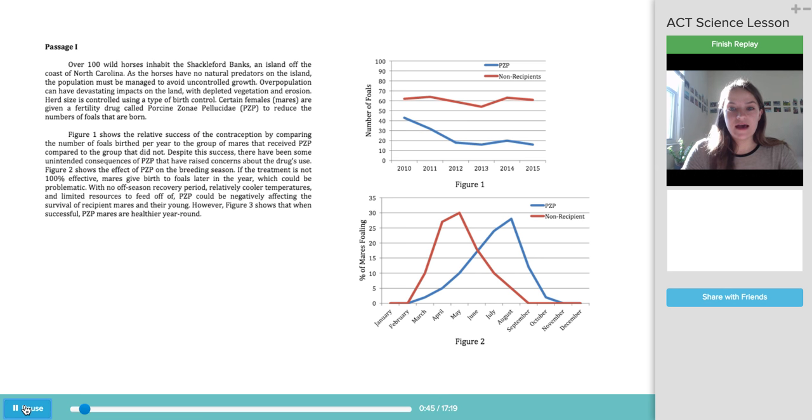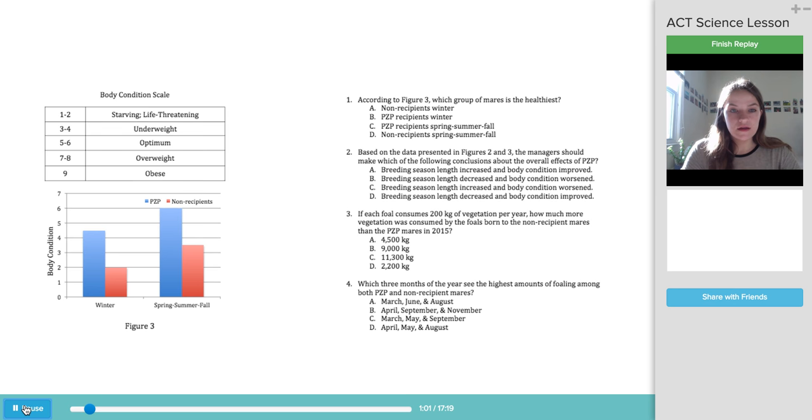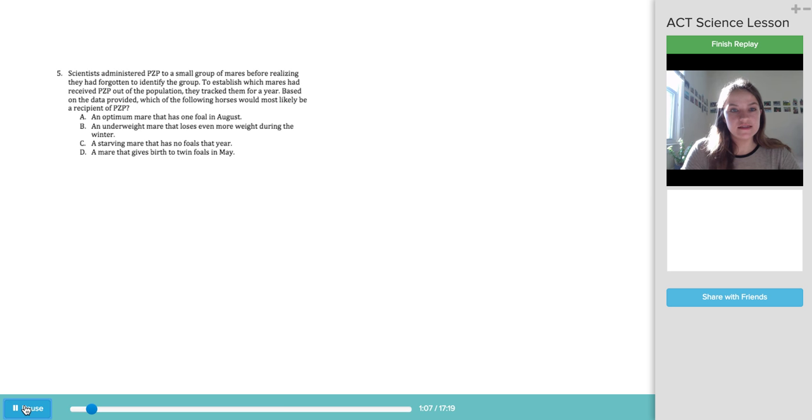So here we have a typical passage that you can expect to see. It starts with some text, not too much, a couple paragraphs, and then figures that accompany the text. So here we have one, two figures, there's a couple more sections, a third figure, and then one, two, three, four. This section has five questions that go along with it.